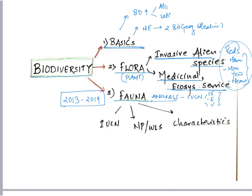When studying animals, since there are multiple IUCN-listed critically endangered, endangered, and vulnerable animals, how should one approach the fauna part? From 2013 to 2019, one should analyze all questions related to biodiversity, especially animals. See what animals UPSC has already asked, know their current IUCN status — are they critically endangered, endangered, or vulnerable — then try to see where they are located and in which national park or wildlife sanctuary.